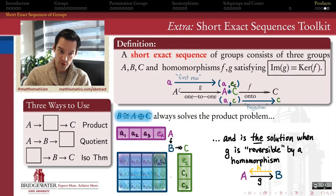So, we can convince ourselves that this external direct product is always a solution to the product problem, and in a situation where I can reverse that first step. So, I can go backwards on this one-to-one function, not just from the first row, but from any element inside of B.